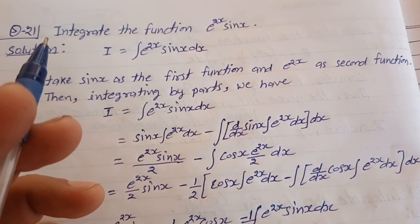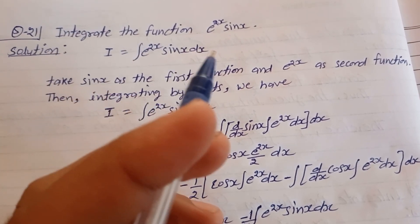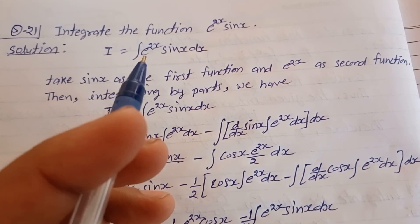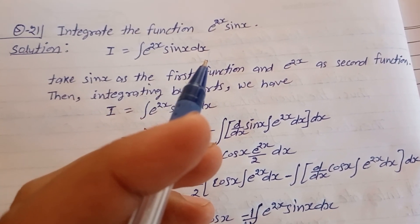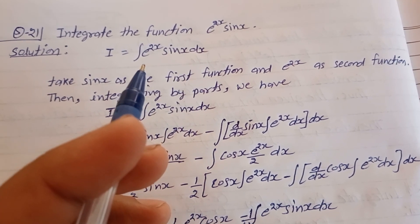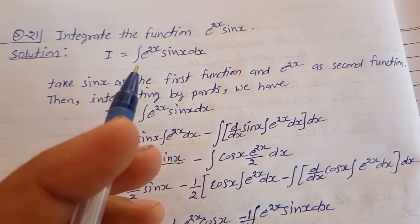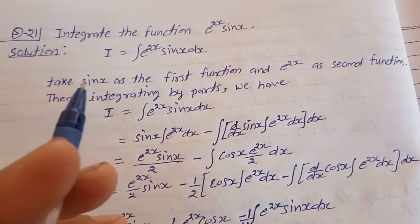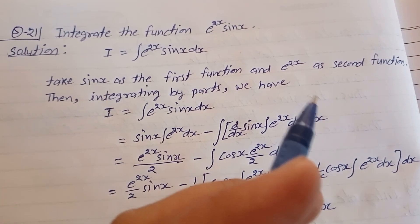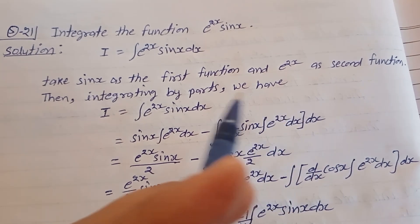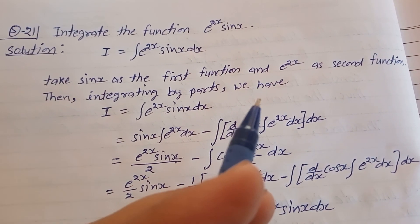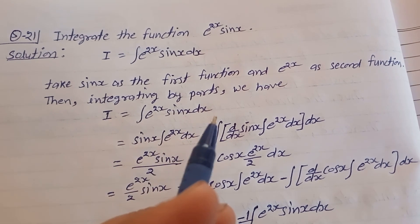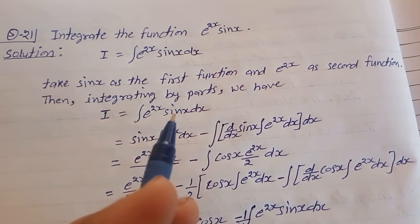We solve question 21, exercise 7.6, class 12th: integrate the function e^(2x)·sin(x). Let I equal the integration of e^(2x)·sin(x) dx. Using the integration by parts formula, we take sin(x) as the first function and e^(2x) as the second function.